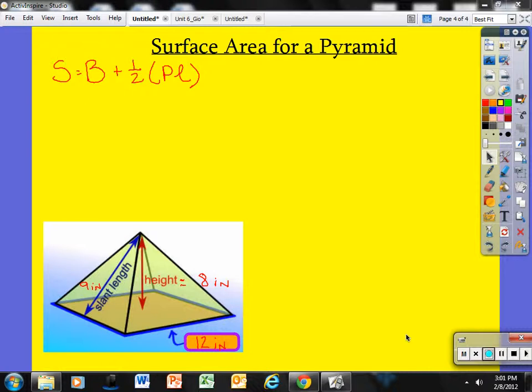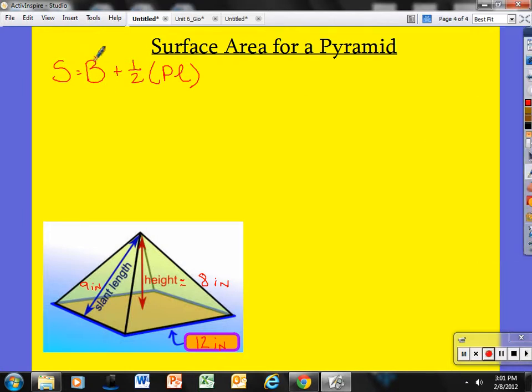I have the formula written up here. This might be something you want to add to your note card. We see capital B, that is the area of the base, plus half times the perimeter times the slant length.